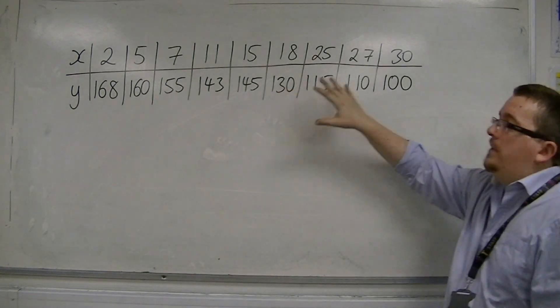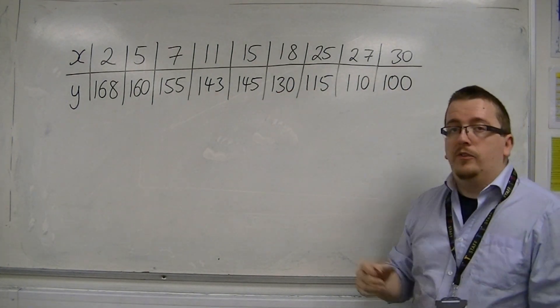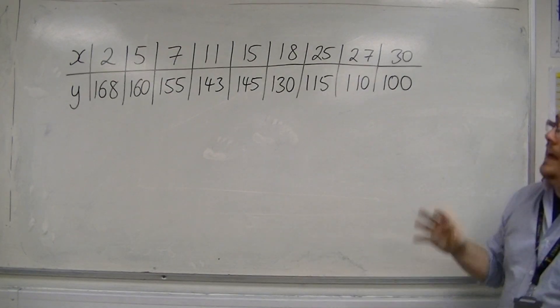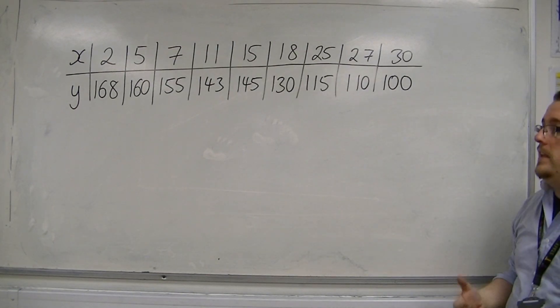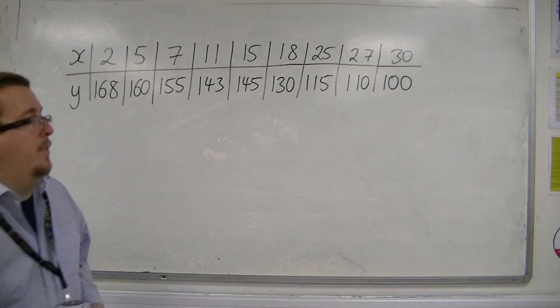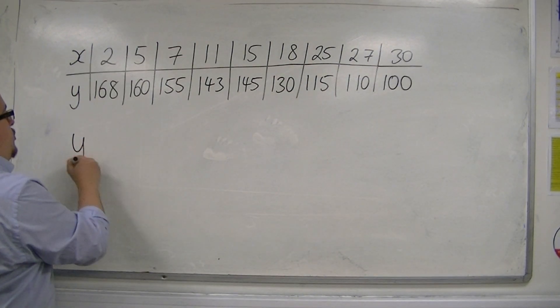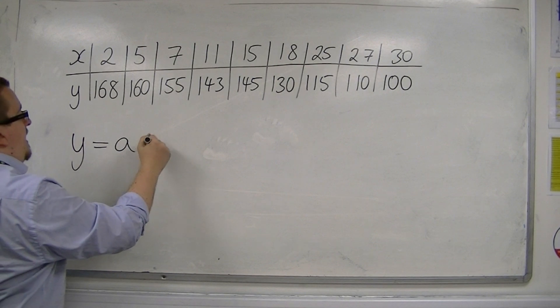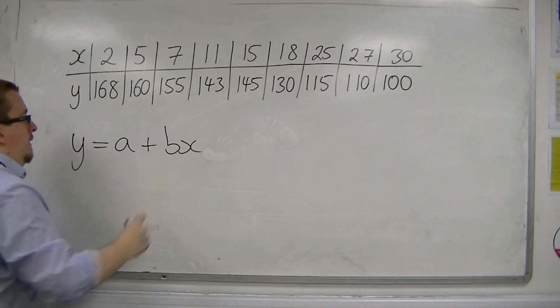In a lot of cases, you may well be given a set, a table of values, x's and y's, and then you're asked to find the equation for least squares regression line. Now, what you need to remember is that we are looking for the equation in the format of y is equal to a plus bx.